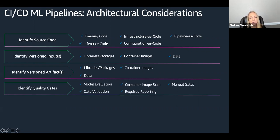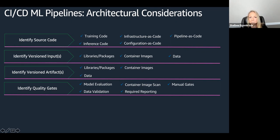Next, you want to identify all the quality gates. This one is by far the hardest in terms of implementing them and establishing what those quality gates should be. Some of the quality gates you would want to implement include things like model evaluation — how did your model perform, looking at objective metrics like accuracy or F1 score. Data validation is another potential quality gate to make sure data is in the format you expect, that the distribution is what you expect. Container image scans is another common one — a lot of companies have established processes to perform container image scans to make sure you're not bringing in any vulnerable packages.